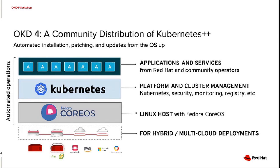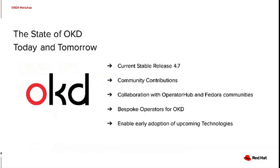Let's talk about where we are today. We've come quite a long way since the major shift a couple years ago from OKD 3.11 to the OpenShift 4 base that OKD 4 is built on. We are currently in our 4.7 release, with 4.8 not too far out on the horizon. We've been taking a lot of community contributions that are improving this platform, and we have active collaboration established with both the Fedora communities for our underlying operating system as well as folks contributing to the Operator Hub.